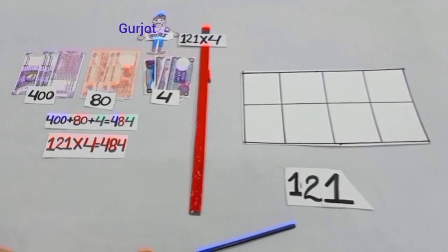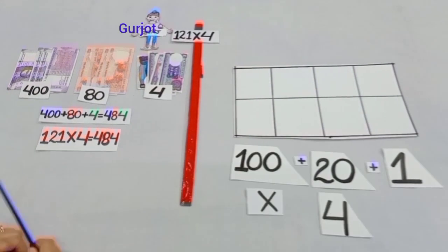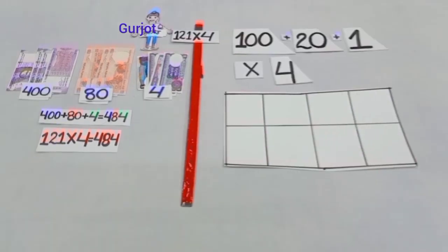We will define 121 with the help of place value cards like this, 100 plus 20 plus 1 and we will multiply it by 4. So before multiplication, we have to write the given digits. Let's start.